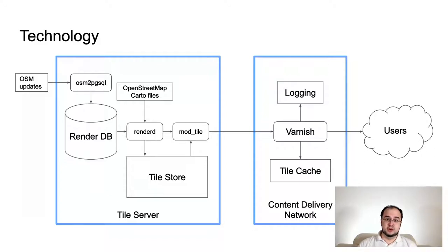In front of the tile server, we have a content delivery network. This is a commercial service that caches files closer to the users, serving 90% of user requests. It is much faster and closer to the users but knows nothing about maps — we're only responsible for the configuration. The difference between the tile store and the tile cache is how they operate and size; the tile store is much larger and stores more tiles. Only cache misses from the CDN impose a load on our servers.